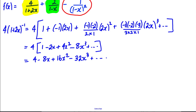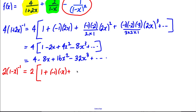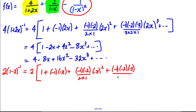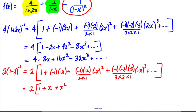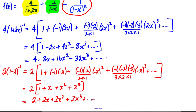Next, we expand 2(1 - x)⁻¹. Keeping the 2 outside, applying the binomial with n = -1 and x replaced by -x: 1 + (-1)(-x) + [(-1)(-2)/2](-x)² + [(-1)(-2)(-3)/6](-x)³ = 1 + x + x² + x³. Multiplying by 2: 2 + 2x + 2x² + 2x³.